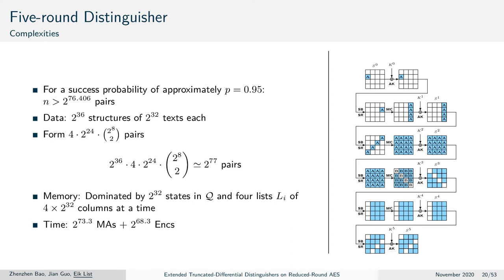Using the same formulas for a success probability of about 0.95, we obtain about 2^{76.4} pairs. We could somewhat optimize this using structures — for instance, structures that contain pairs from a column or diagonal with 2^{32} texts each. Then we could form 4 × 2^{24} × 2^8 / 2 pairs from such a structure. We would need 2^{36} structures, yielding about 2^{77} pairs. The memory would be dominated by storing 2^{32} states in an array or hash table with four lists for inverse columns of ciphertexts.